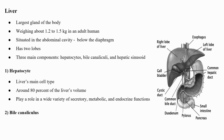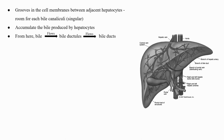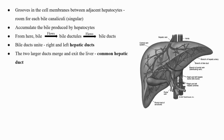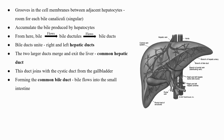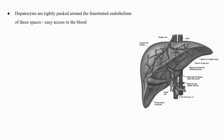Bile canaliculi, also known as bile capillaries, are thin ducts or grooves in the cell membranes between adjacent hepatocytes. These small ducts accumulate the bile produced by hepatocytes; from here bile flows into bile ductules and then into bile ducts. The bile ducts unite to form the right and left hepatic ducts, which merge and exit the liver as the common hepatic duct. This duct joins with the cystic duct from the gallbladder, forming the common bile duct through which bile flows into the small intestine. A hepatic sinusoid is an open porous blood space formed by fenestrated capillaries from nutrient-rich hepatic portal veins and oxygen-rich hepatic arteries.